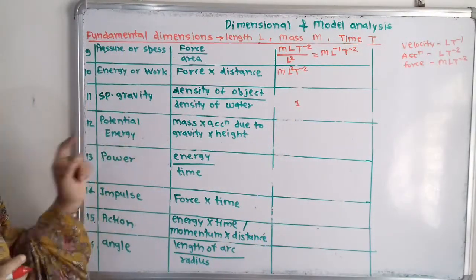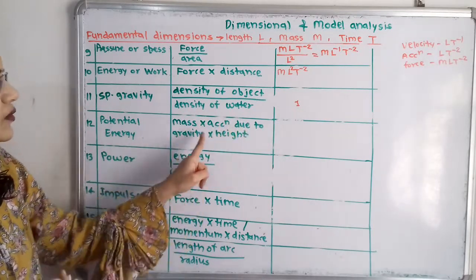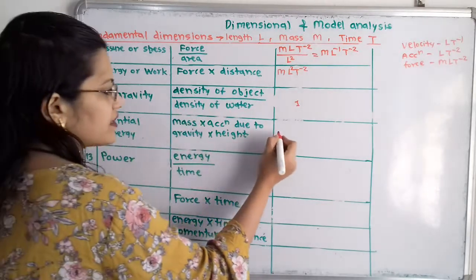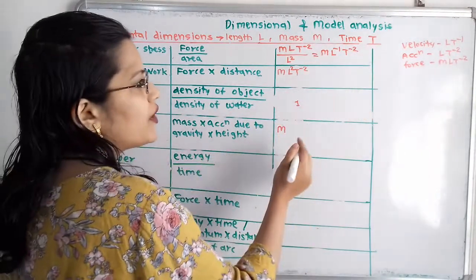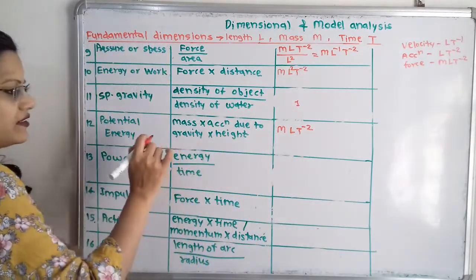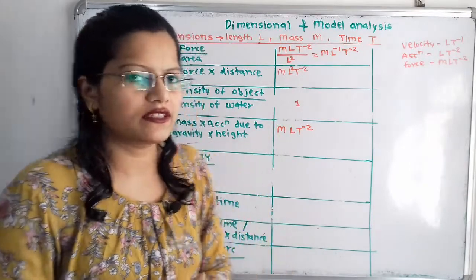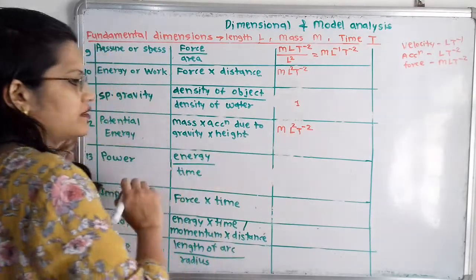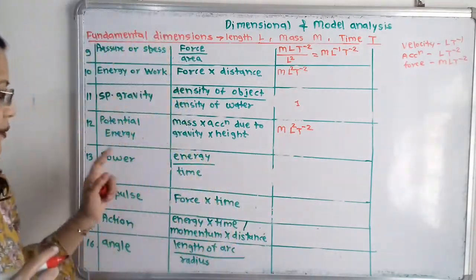Then next is potential energy. Potential energy is mass into acceleration due to gravity into height. For mass it is M, acceleration due to gravity is L into T raised to minus 2, and height is length L. So L multiplied by L gives L squared, and the dimension is M into L squared into T raised to minus 2.